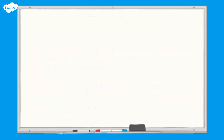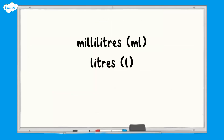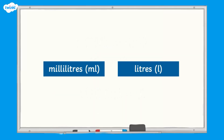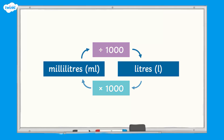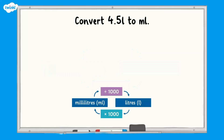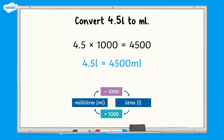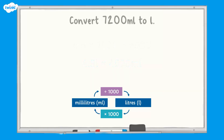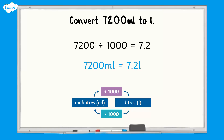Now let's look at some metric units of capacity: millilitres and litres. There are 1000 millilitres in one litre. To convert millilitres to litres, divide by 1000. To convert litres to millilitres, multiply by 1000. For example, converting 4.5 litres to millilitres: multiply 4.5 by 1000 to give 4500 millilitres. To convert 7200 millilitres to litres: divide 7200 by 1000 to give 7.2 litres.